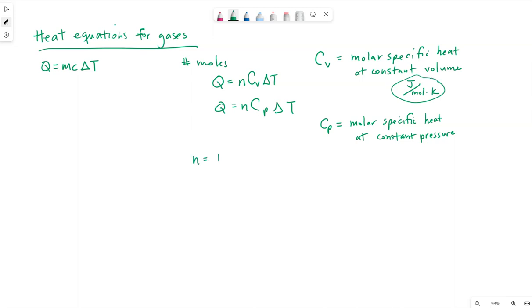This allows us, if you remember, lowercase n is the number of moles. And that way we can talk about heat in terms of our gases in terms of the number of moles instead of number of molecules. Delta T is still the final temperature minus the initial temperature, the difference.